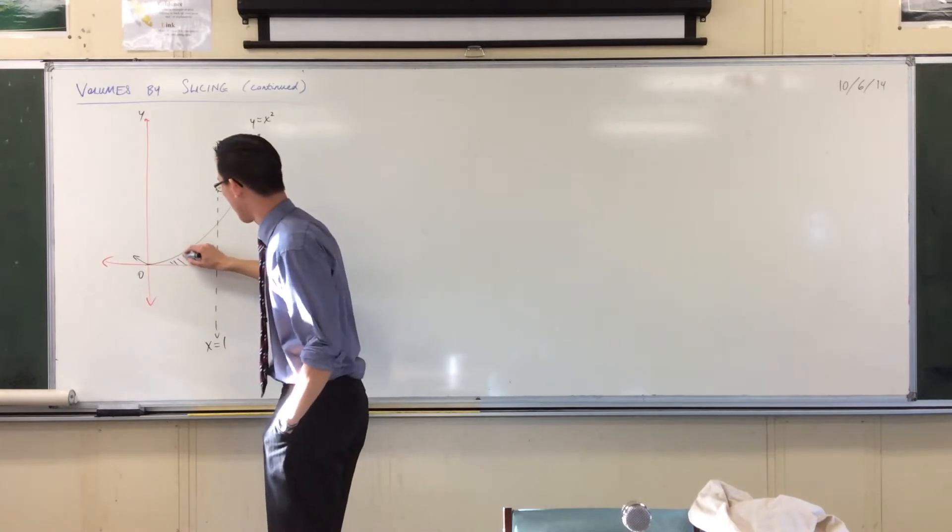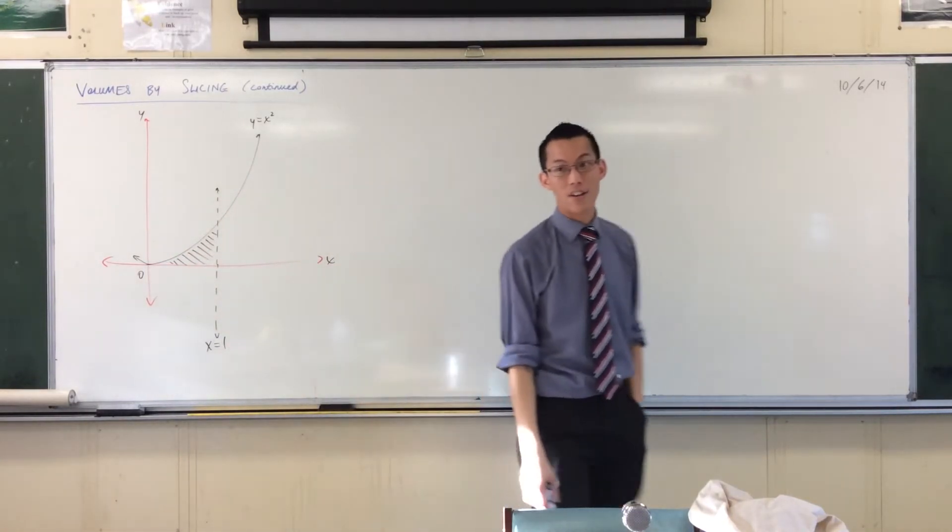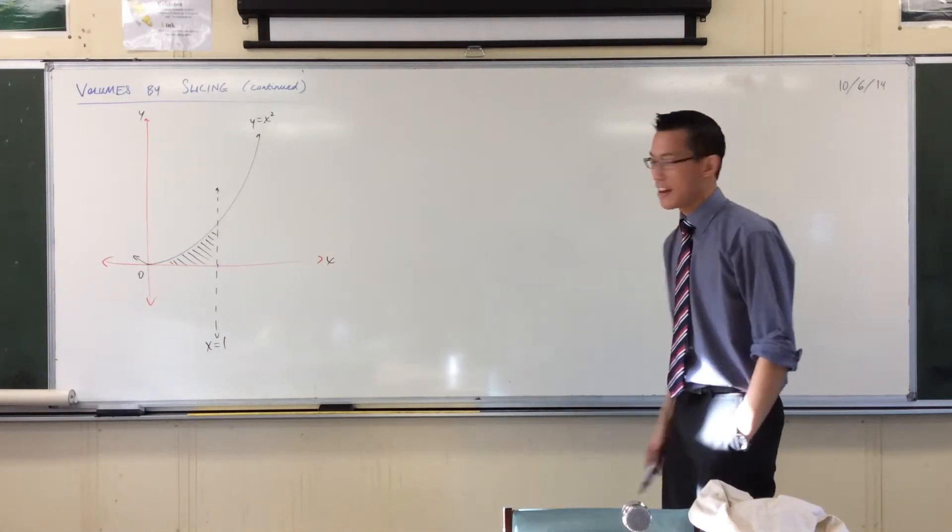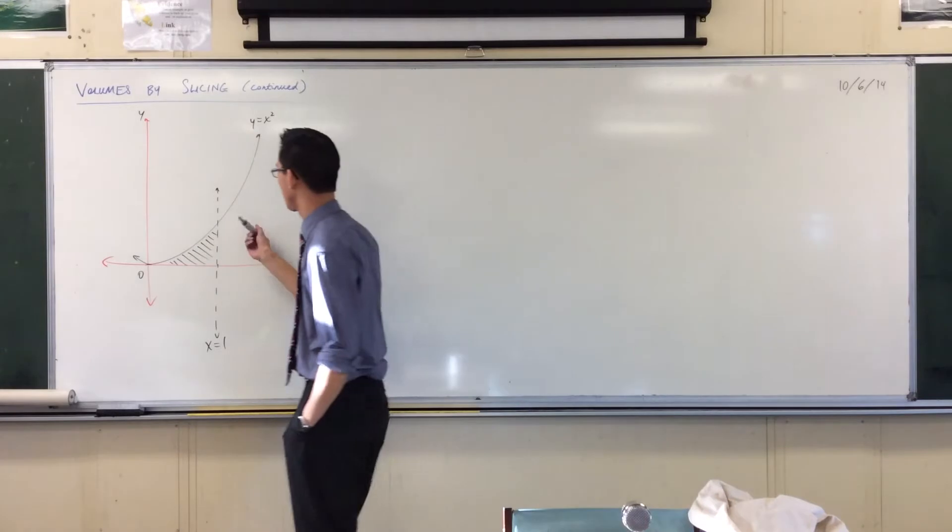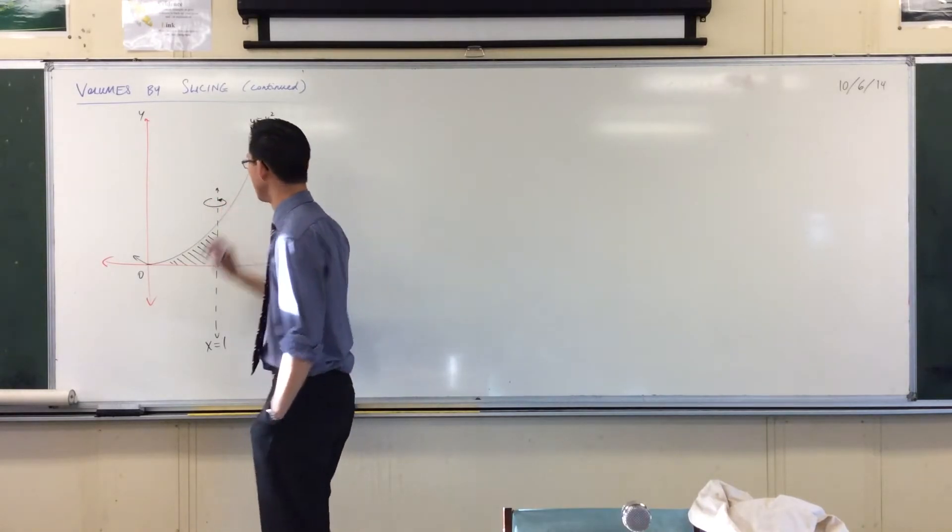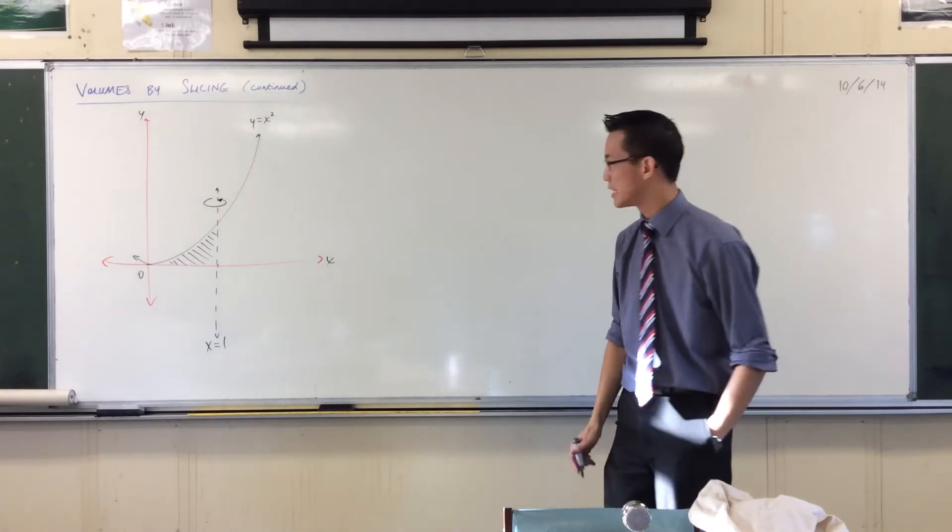So here's the area that they're going to form a solid out of by rotating it, okay? Now they're rotating it around this axis. x equals 1 is the axis, right? So here you go. That's the kind of rotation we've got.